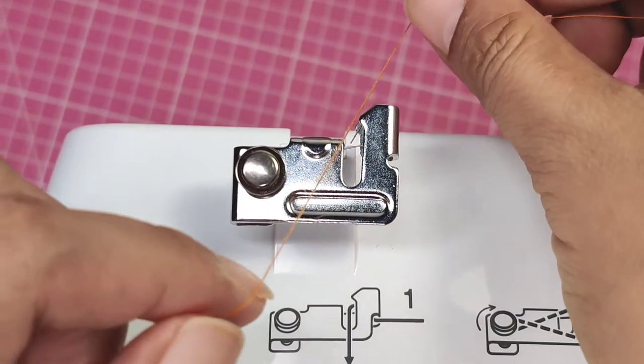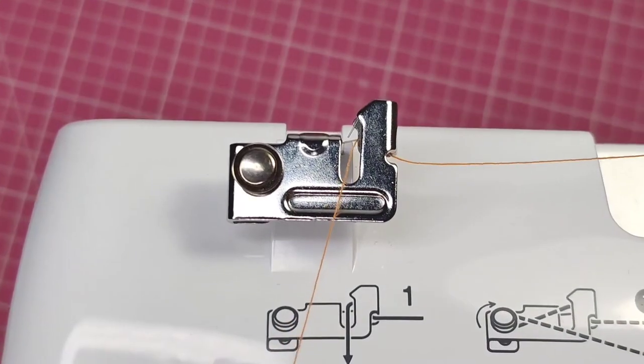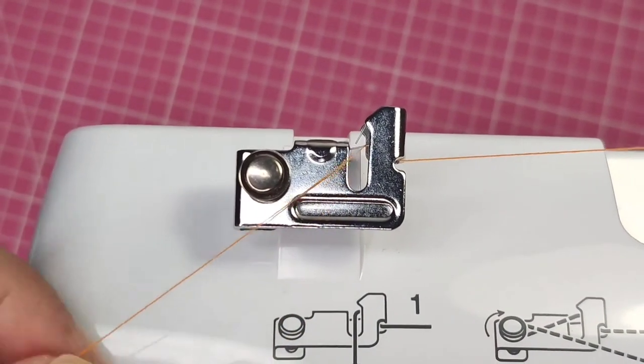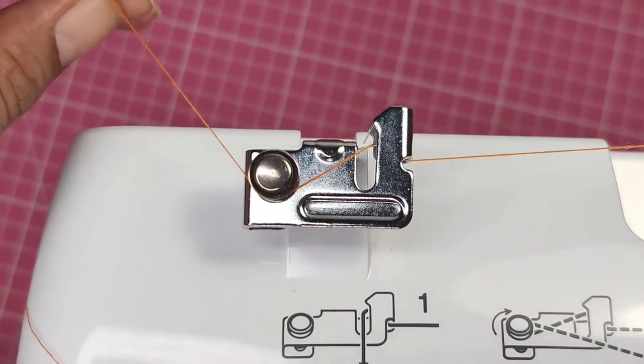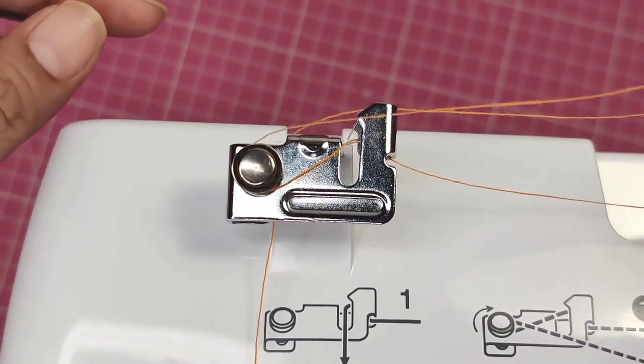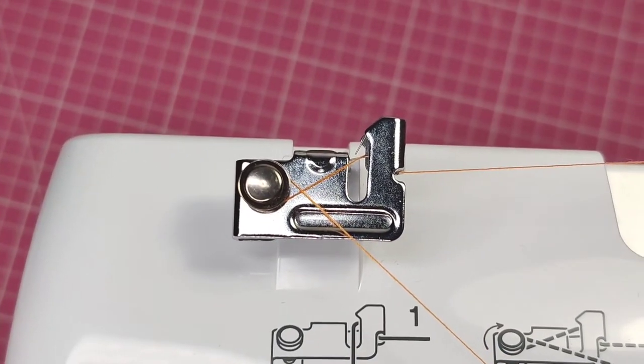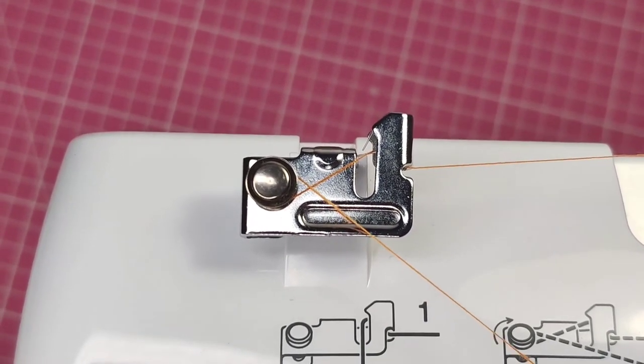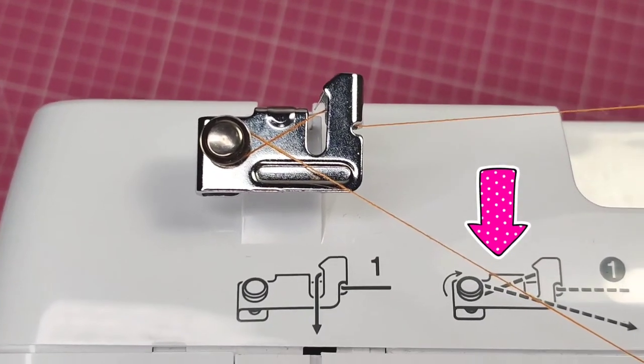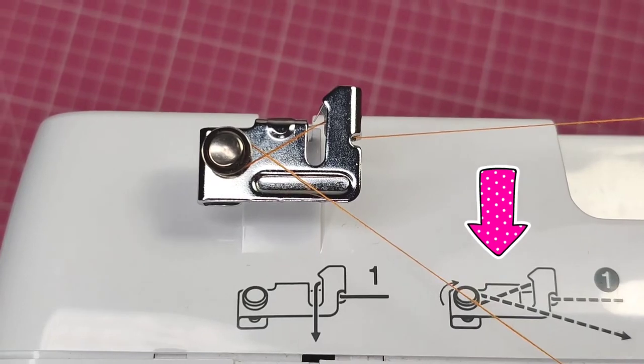Here's a closer look at how it's done. Pass the thread along the gap in the thread guide and pull it towards you so that the small springing hook can catch it. Wrap the thread around the pretension disc and pull the thread completely. You can always refer to this image on the sewing machine for reference if you're not feeling confident.